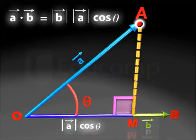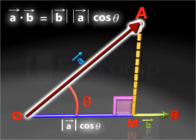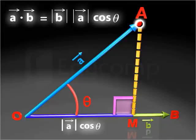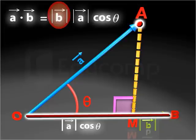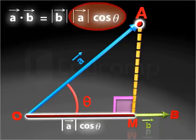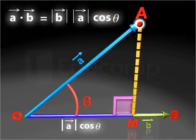Thus, the scalar product of vectors A and B is the product of the magnitude of vector B and the scalar component of vector A along vector B.